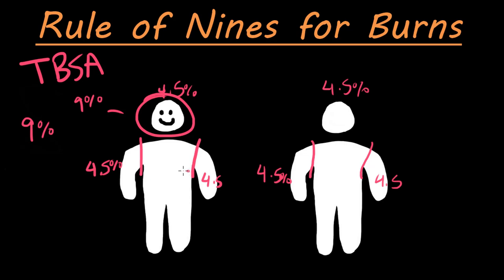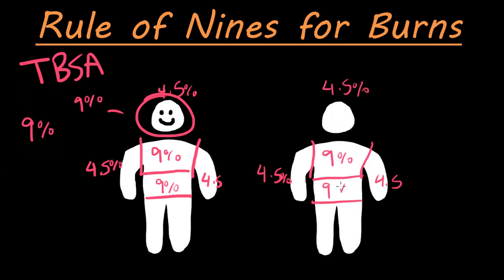And then we have the anterior trunk area. We split this into two. The chest area is going to be an entire 9% by itself, because it has a much larger surface area compared to the arm. And then the abdominal area is 9% as well. Same thing on the back side — split it into two: 9% on the upper back and 9% on the lower back.